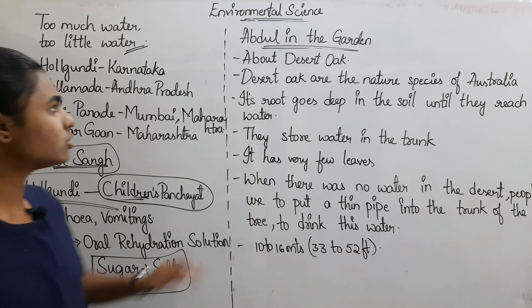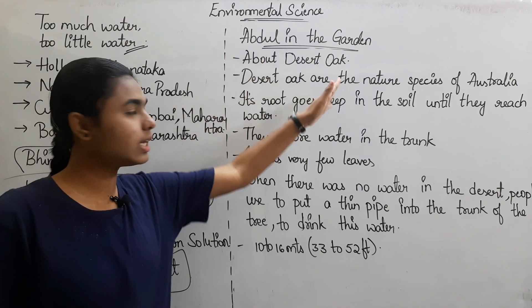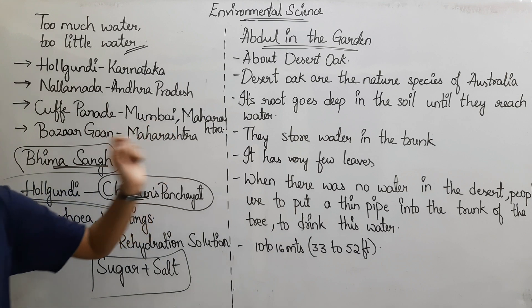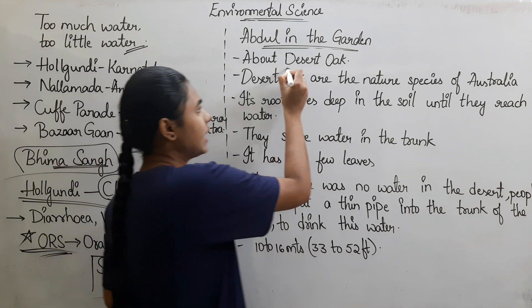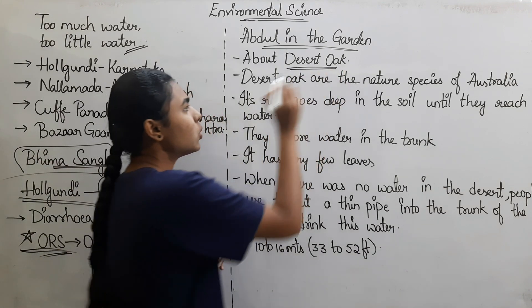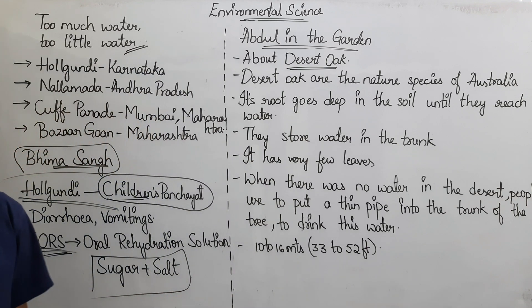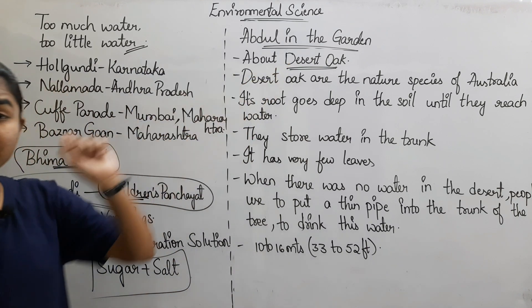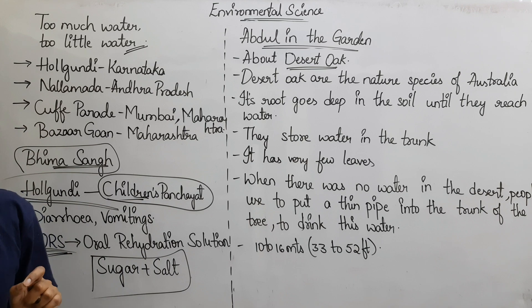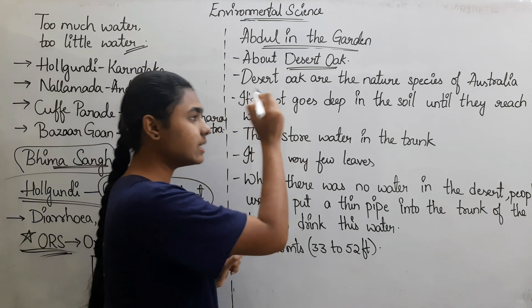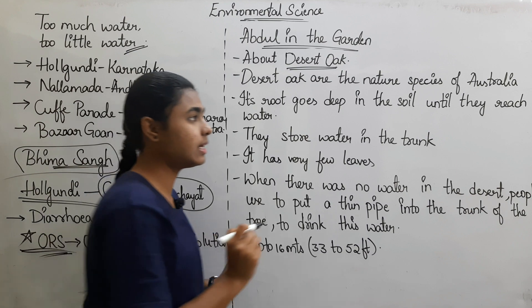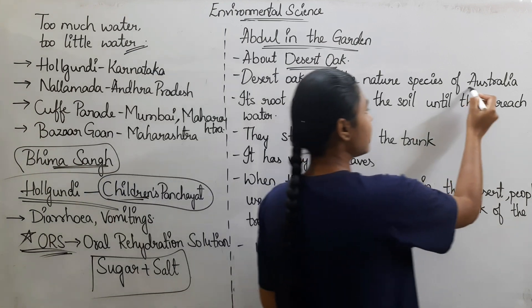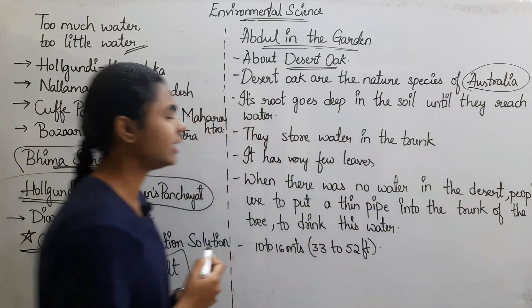The next topic is Abdul Indi Garden. In this topic, Desert Oak is a tree. In Seated Paper 1, Desert Oak is asked as a direct question — specifically, where is its native place? The answer is Australia.